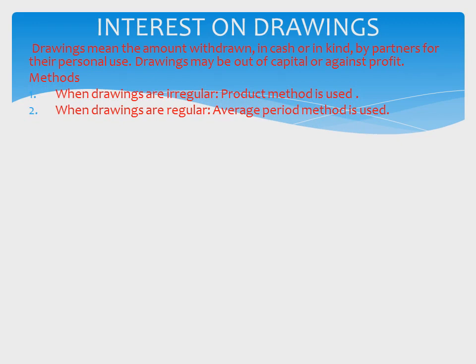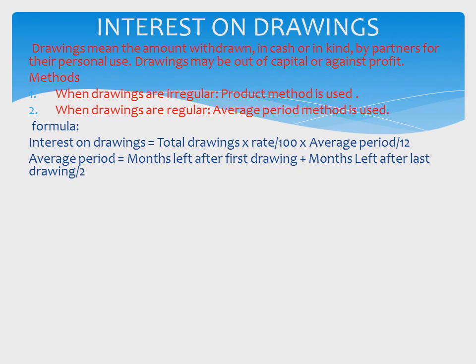There are various methods of calculation of interest on drawings. When drawings are made on a regular basis, the average period method is used. When drawings are made on an irregular basis, the product method is used. The formula is: Interest on Drawings = Total Drawings × Rate/100 × Average Period/12. The average period is calculated as: (Months left after first drawing + Months left after last drawing) / 2.